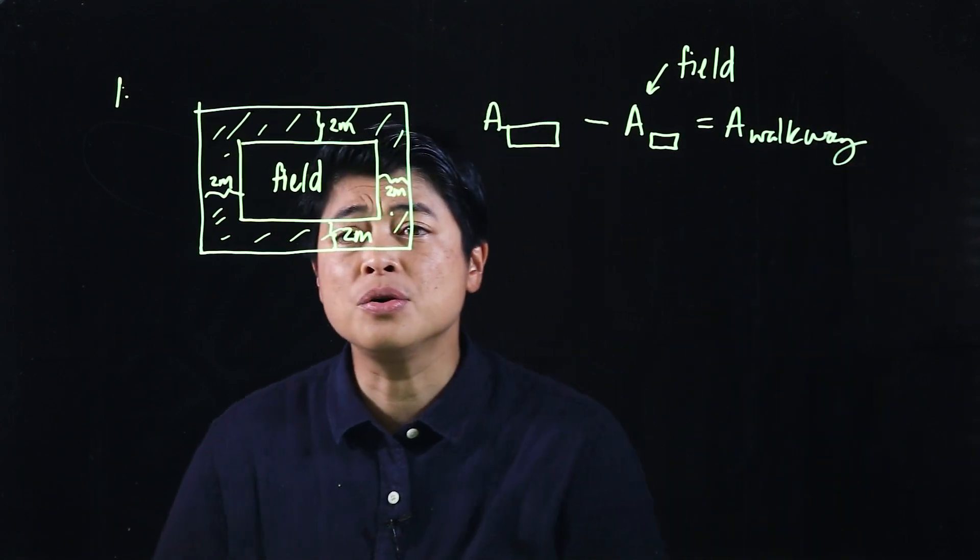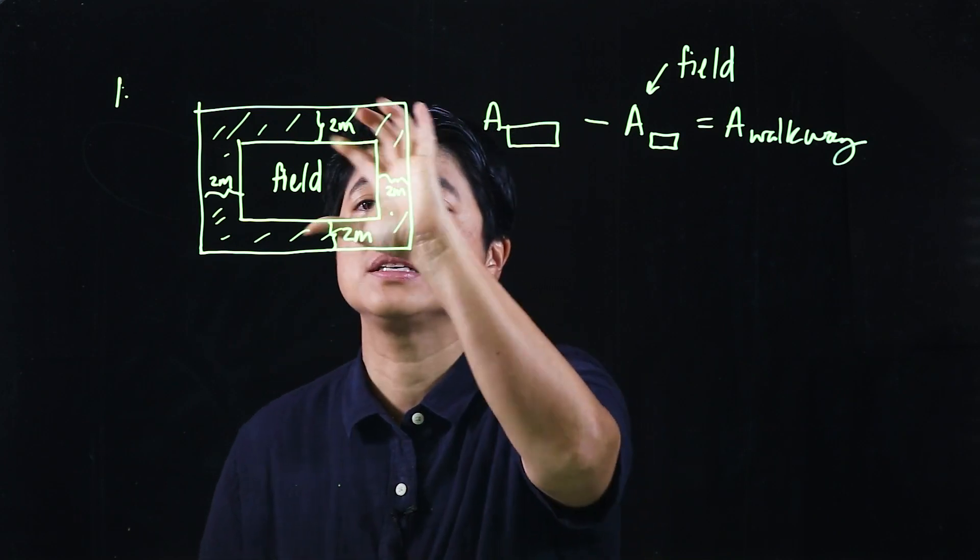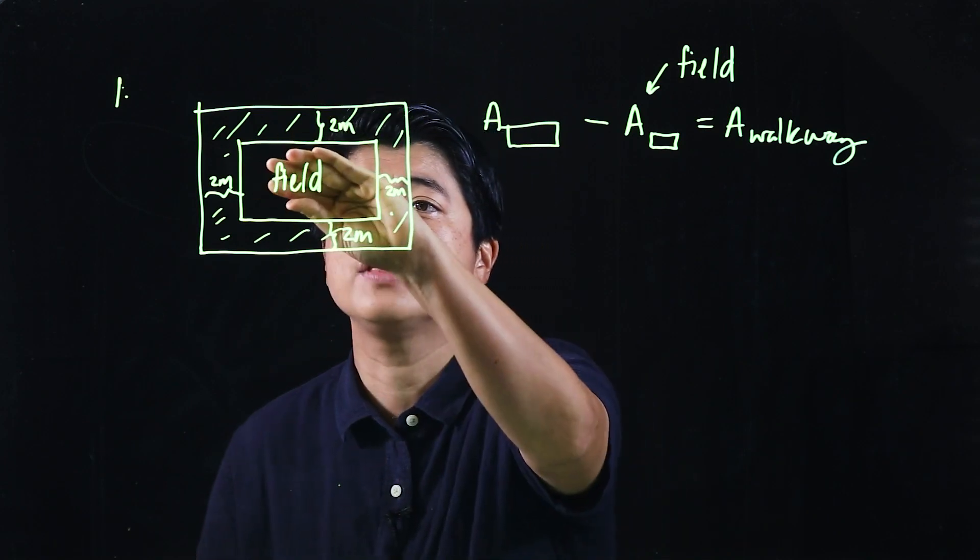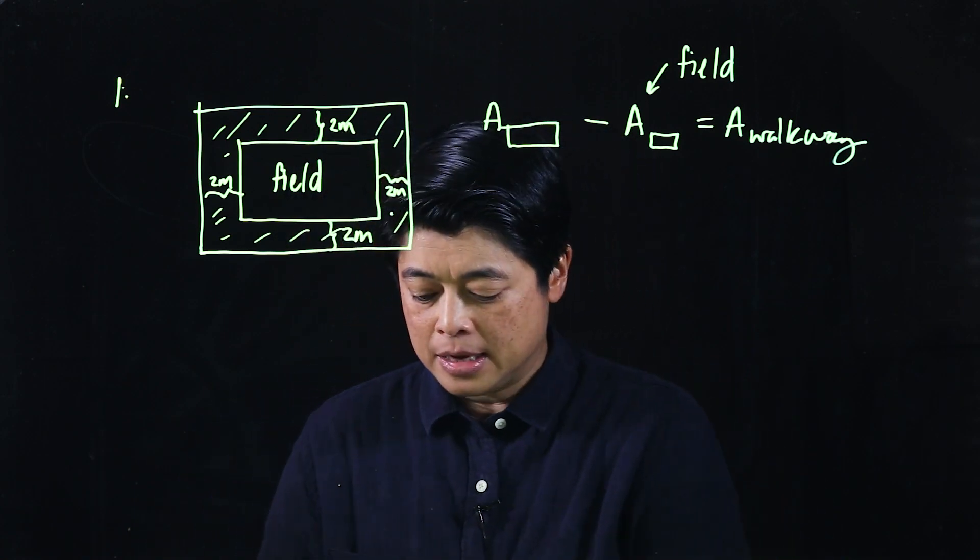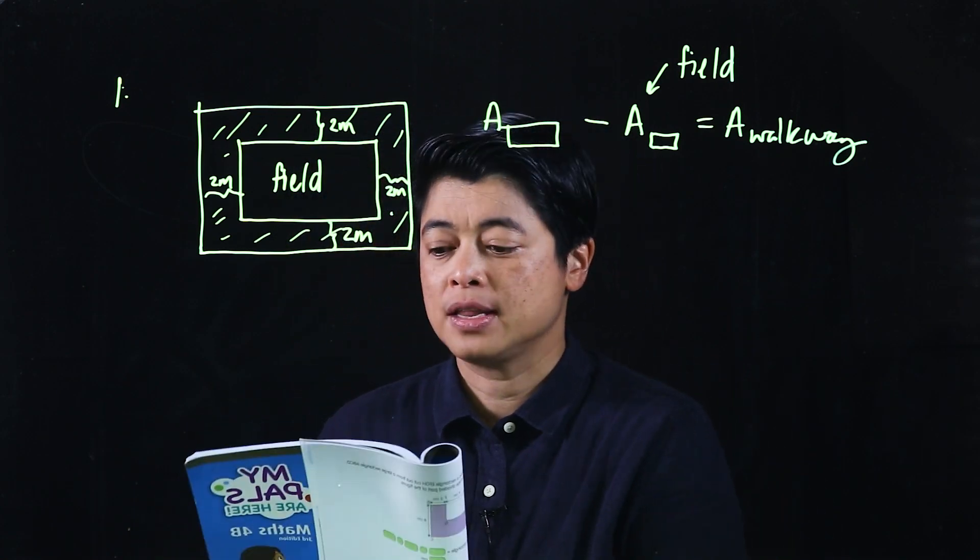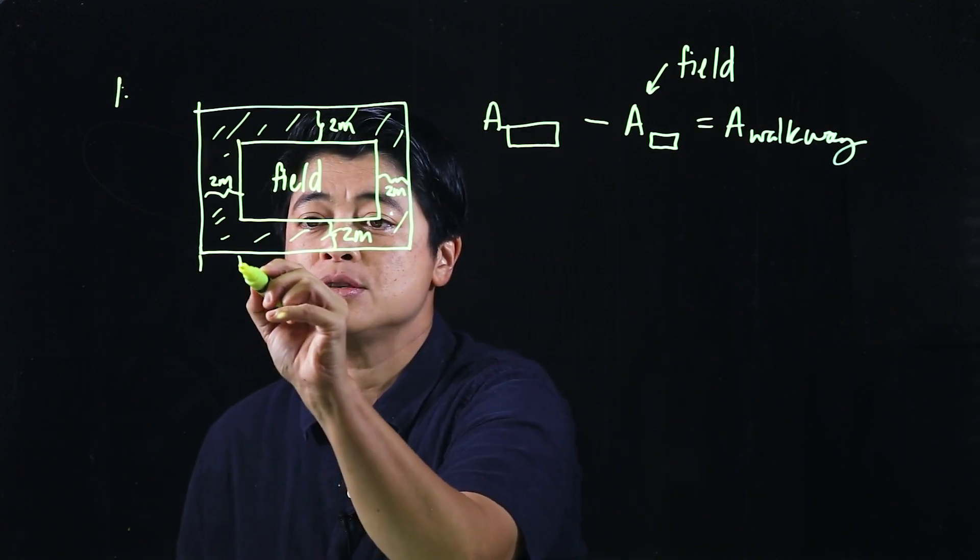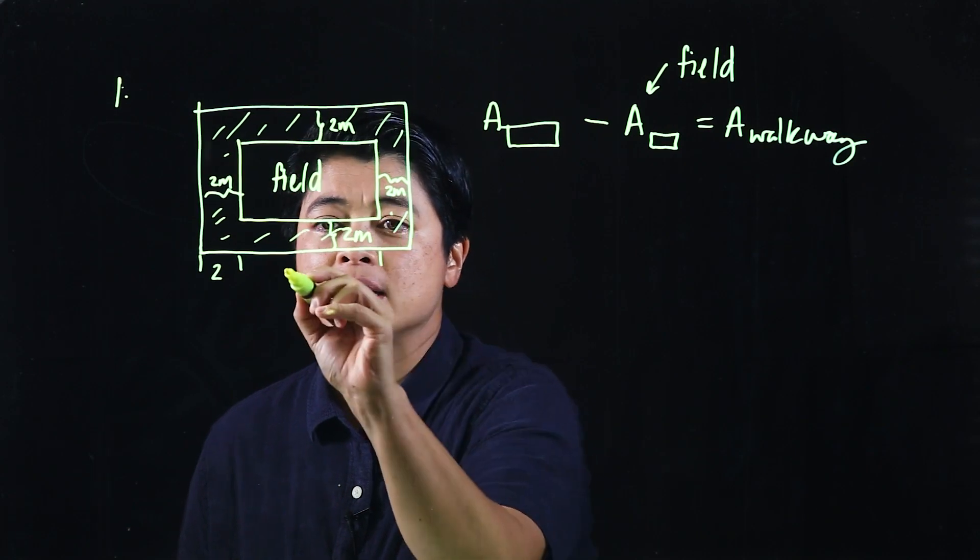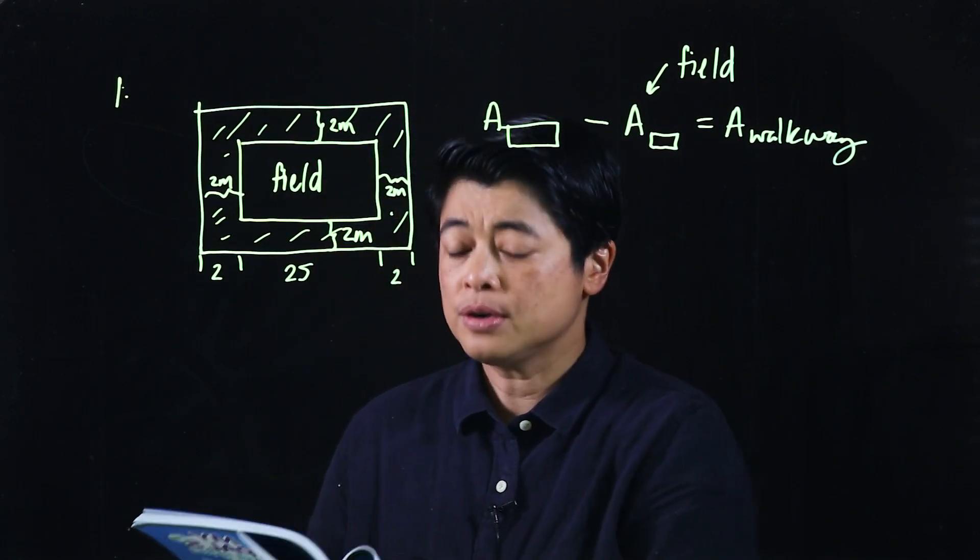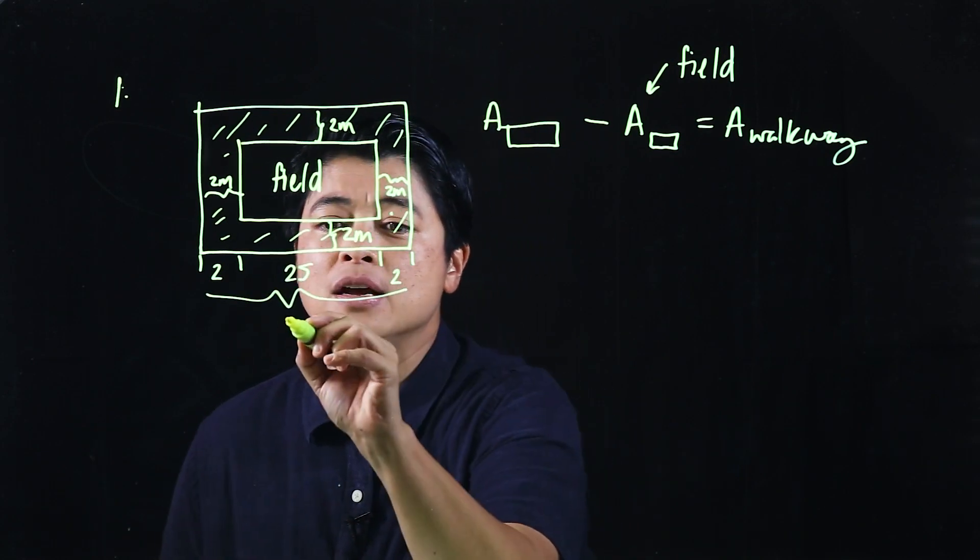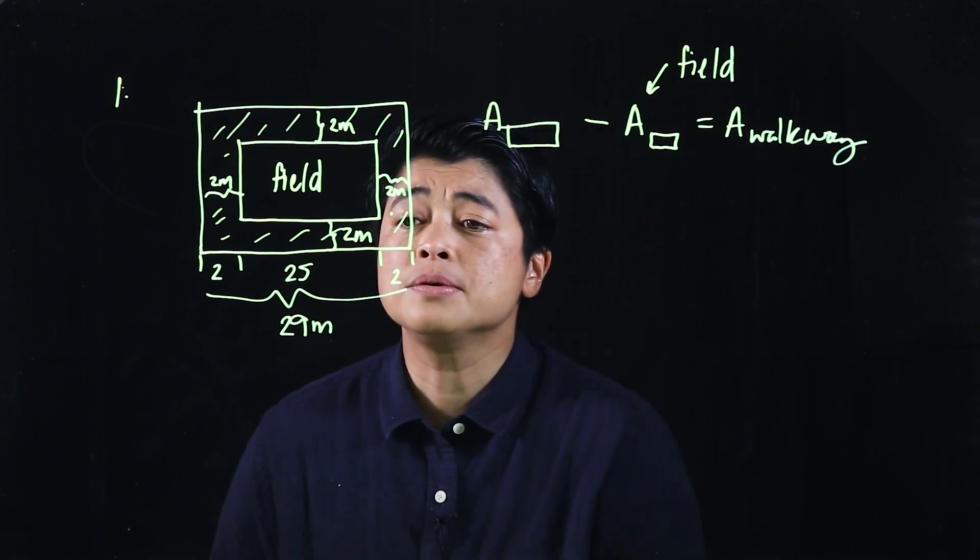There's no other way to find the area of the walkway unless we do this method, which means area of the big thing and then remove that gives you the area of what's left over. Now the dimensions of the figure are given. So this is two, they said this is two, this is up to here is 25, and that's two. So if we follow that, that would be 29 meters.